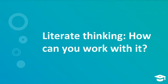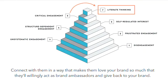How do you identify who is at this highest level of engagement and how do you keep them there? To bring your audience from critical engagement to the top level — literate thinking — you'll need to connect with them in a way that makes them love your brand so much that they'll willingly act as brand ambassadors to their network, and reciprocate their loyalty by giving back to your brand — for example, by giving reviews. Having as much of your audience as possible in this bucket is the goal, but it takes a lot of work to keep them there.